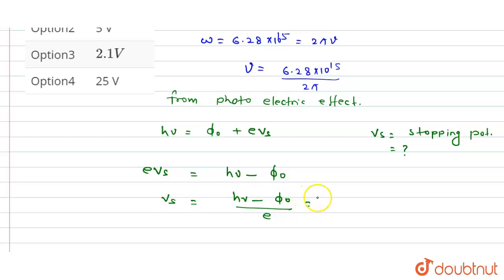Now we put the value. The value of Vₛ equals Planck's constant, which is 6.626 × 10⁻³⁴ multiplied by 10¹⁵ divided by 2π, minus the work function, which is 2 electron volts.